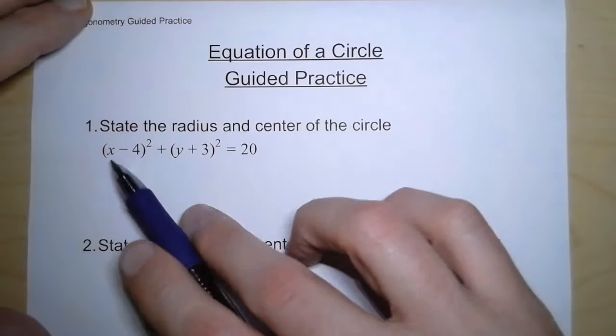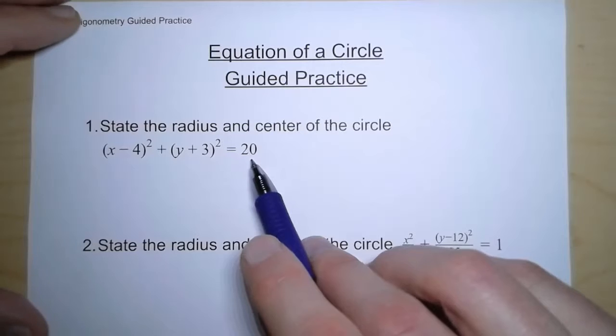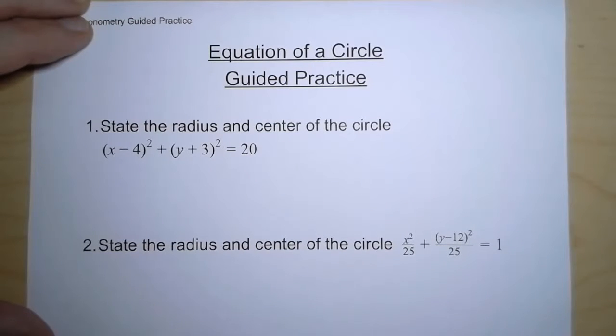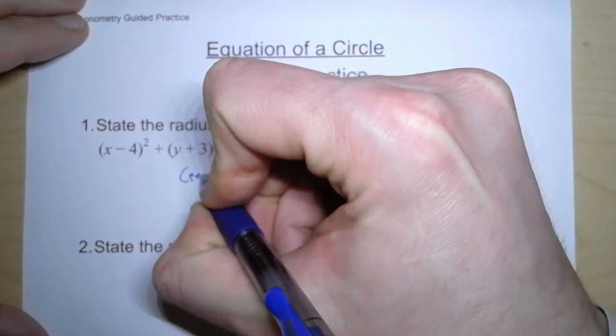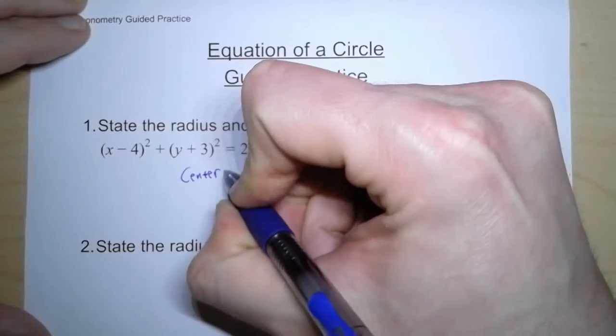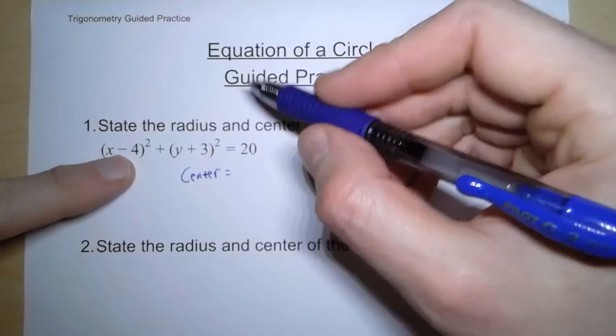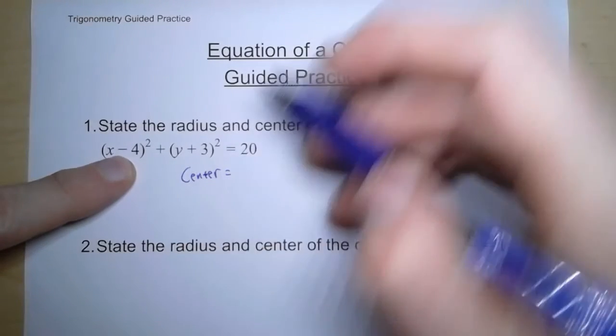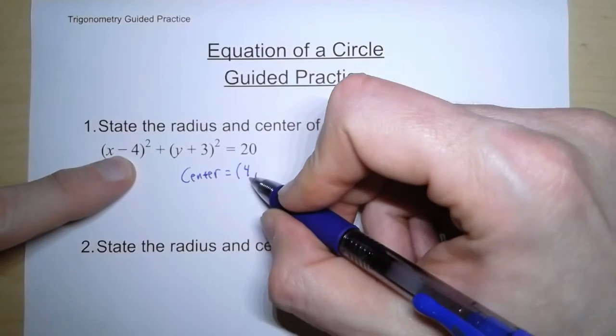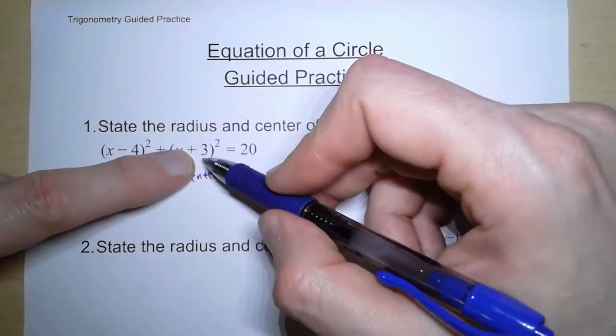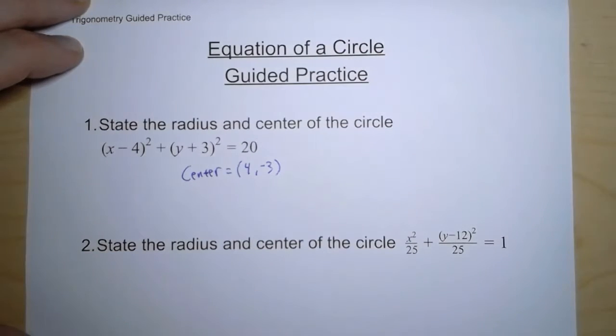So here we have this equation: x minus 4 squared plus y plus 3 squared equals 20. And we're asked to find the radius and the center. Now, the normal center for a circle is at the origin, at 0, 0. But because of this minus 4, it gets moved over 4 spaces to the right. So the center is at 4 for the x, and the plus 3 moves it down 3. So it's at 4, negative 3.